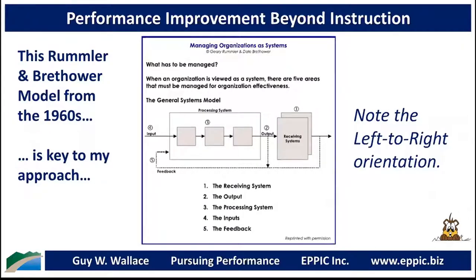This model goes back to the 1960s at the University of Michigan where Gary Rumler and Dale Brethauer met. This is the General Systems Model as Gary called it. There are five components to a process viewed as a system: the receiving system or customers, the output which is an input, the processing system which is a series of tasks or steps — whether automated, manual, human, or AI — and then there are the inputs, and feedback loops. In other versions, Rumler broke out a special kind of feedback he called consequences.